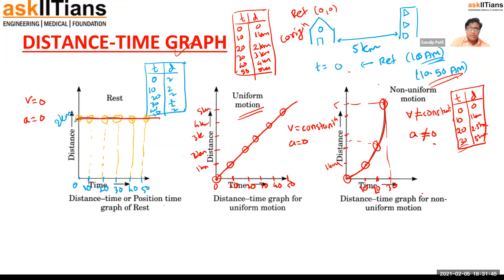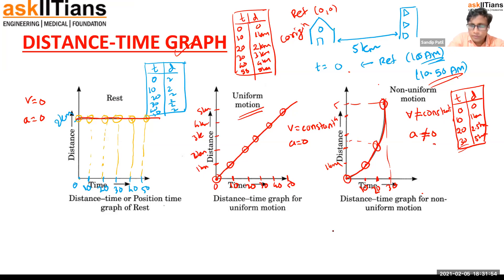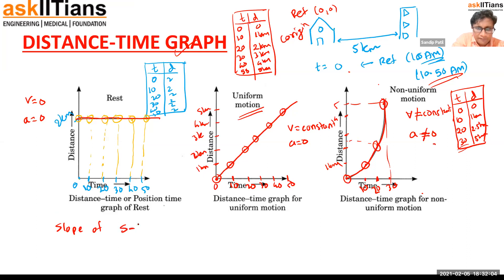To summarize the distance-time graph: Case 1 — velocity zero, acceleration zero (at rest). Case 2 — velocity constant, acceleration zero (uniform motion). Case 3 — velocity increasing, acceleration non-zero (non-uniform motion). An important property: the slope of the distance-time graph gives velocity.